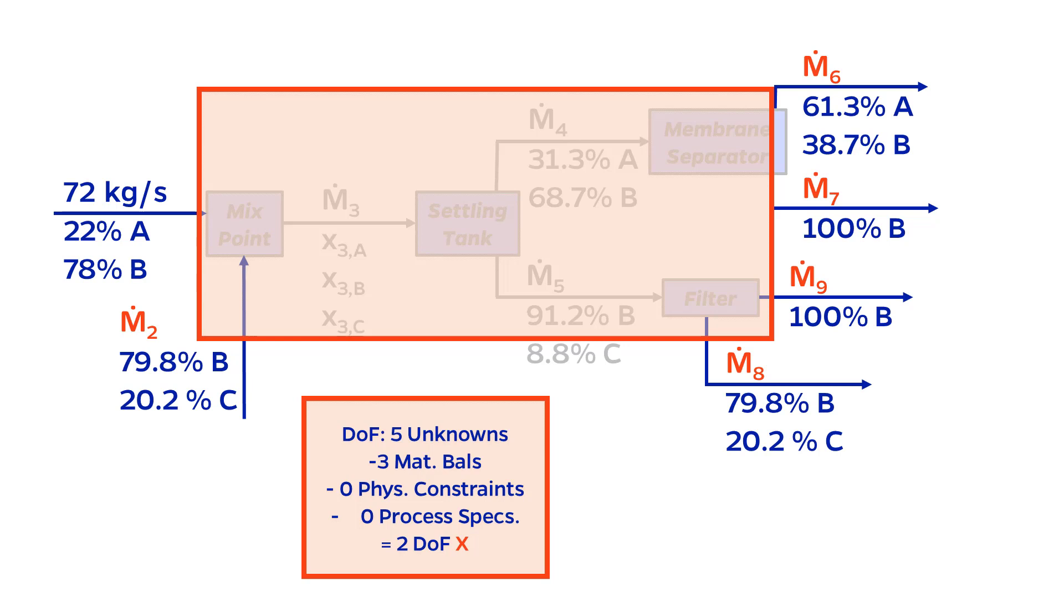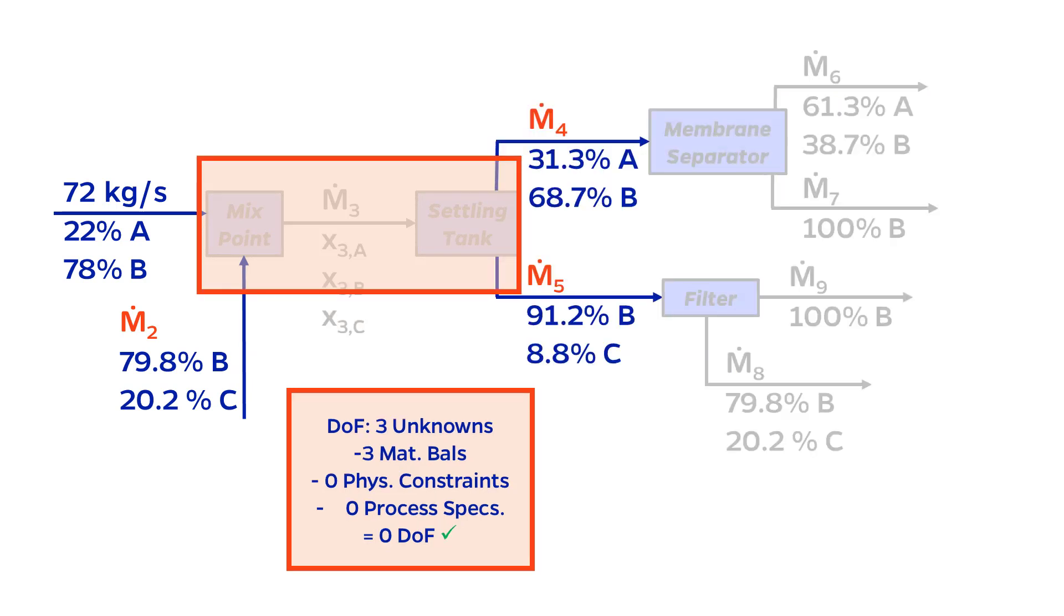We mustn't give up hope just yet, though. What about the combined system of the mix point and the settling tank? With three unknowns and three material balances, finally, at long last, I have a system with zero degrees of freedom, which gives me the green light to start solving.